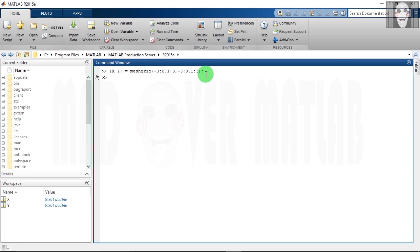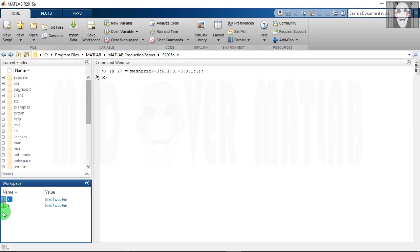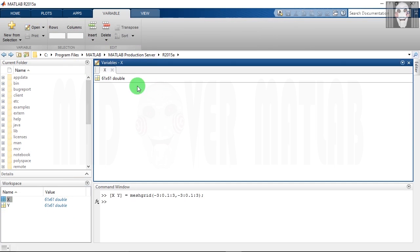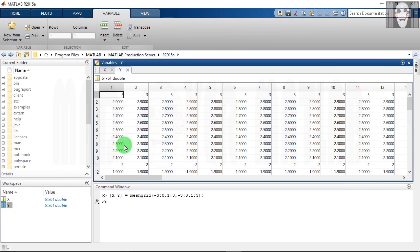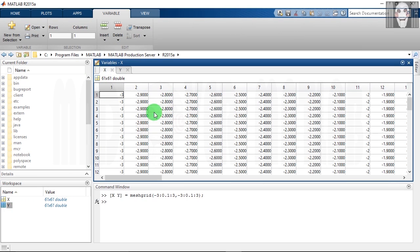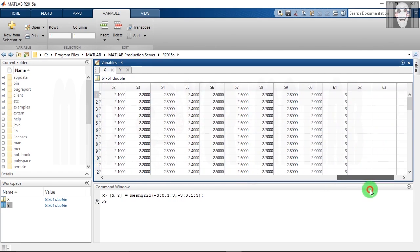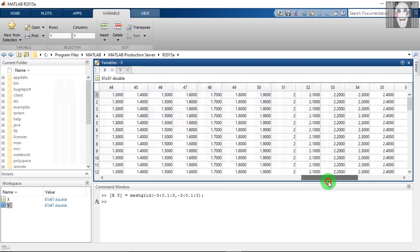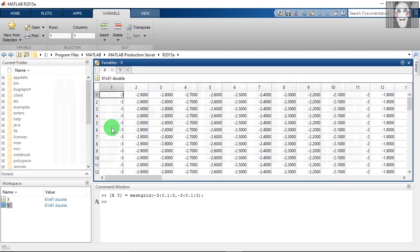When I execute this command, two arrays X and Y have been created in the workspace. Let us see what these arrays contain. As you can see here, the array X has numbers starting from minus 3 and they continue till plus 3, and the same numbers are repeated in every row.